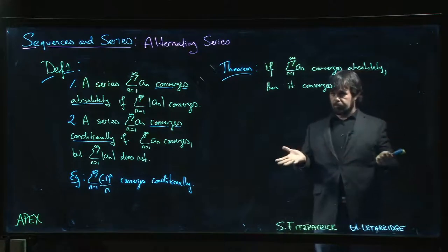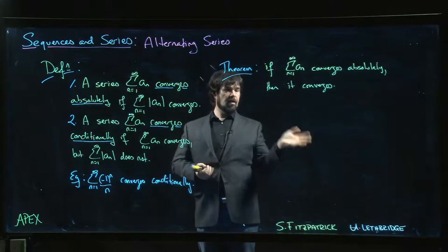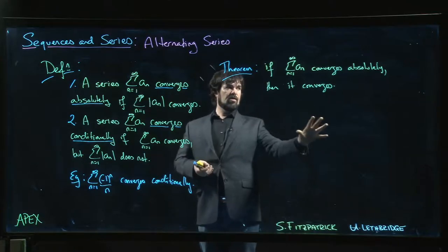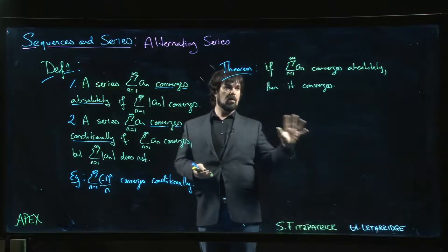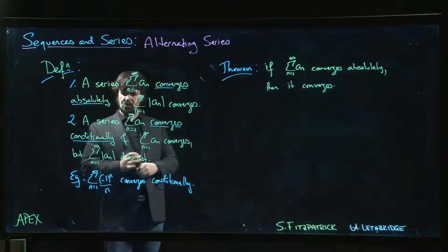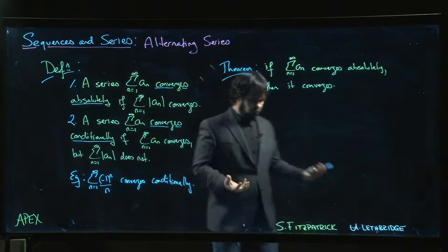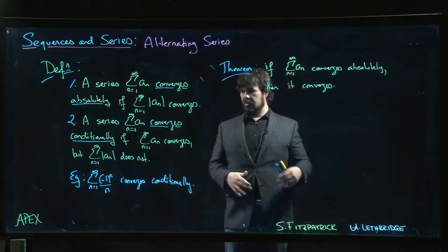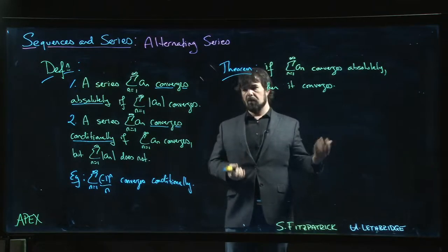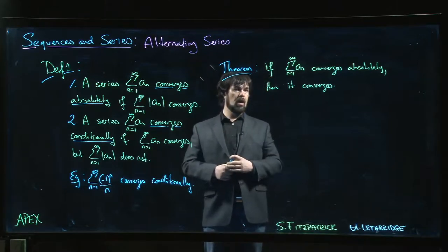This is an important result that comes in handy in a lot of scenarios. We also mention — though we won't address this in a calculus course — that an absolutely convergent series converges to a unique limit, there's only one possible value. Whereas a conditionally convergent series can be rearranged, and you can actually get any number you want by rearranging a conditionally convergent series, which seems really bizarre but happens to be true.